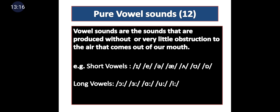When we say 'E,' none of the organs in our mouth from lungs to tongue touch each other — there is no obstruction, so it is a vowel sound. Same with 'A' and 'A' — the air comes straight out without stopping anywhere. Any sound where air is not obstructed is a vowel sound — a pure vowel sound. In English there are 12 pure vowels. Total sounds in English are 44; out of 44, 20 are vowels, and out of 20 vowels, the pure single vowels are 12 in number.